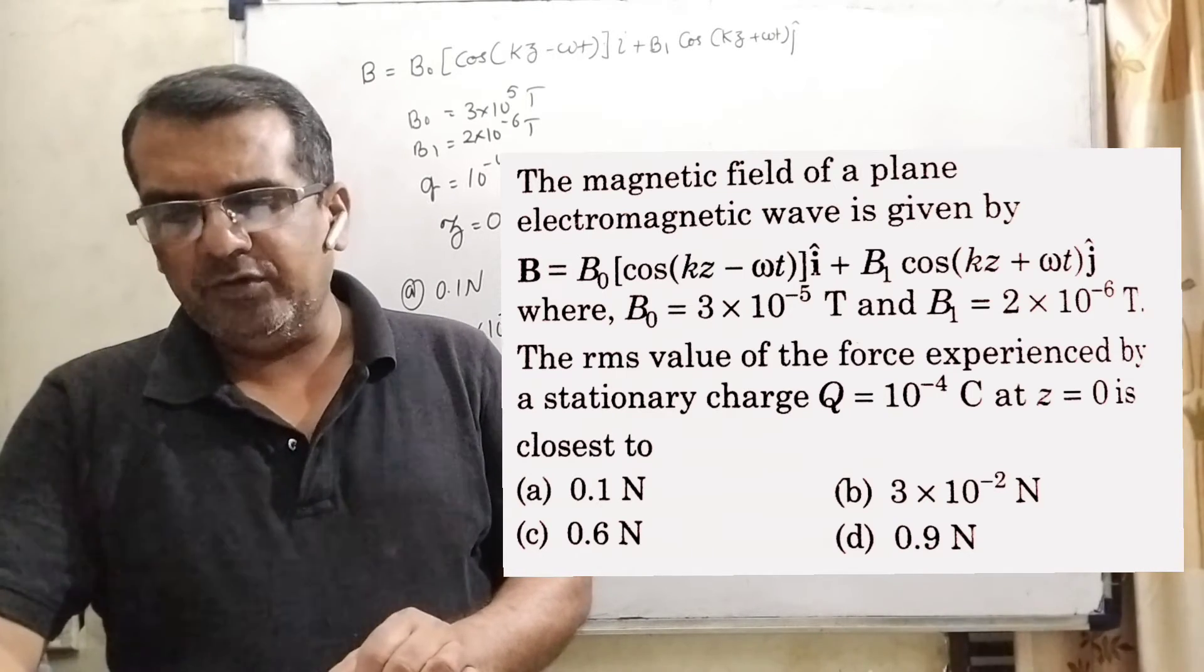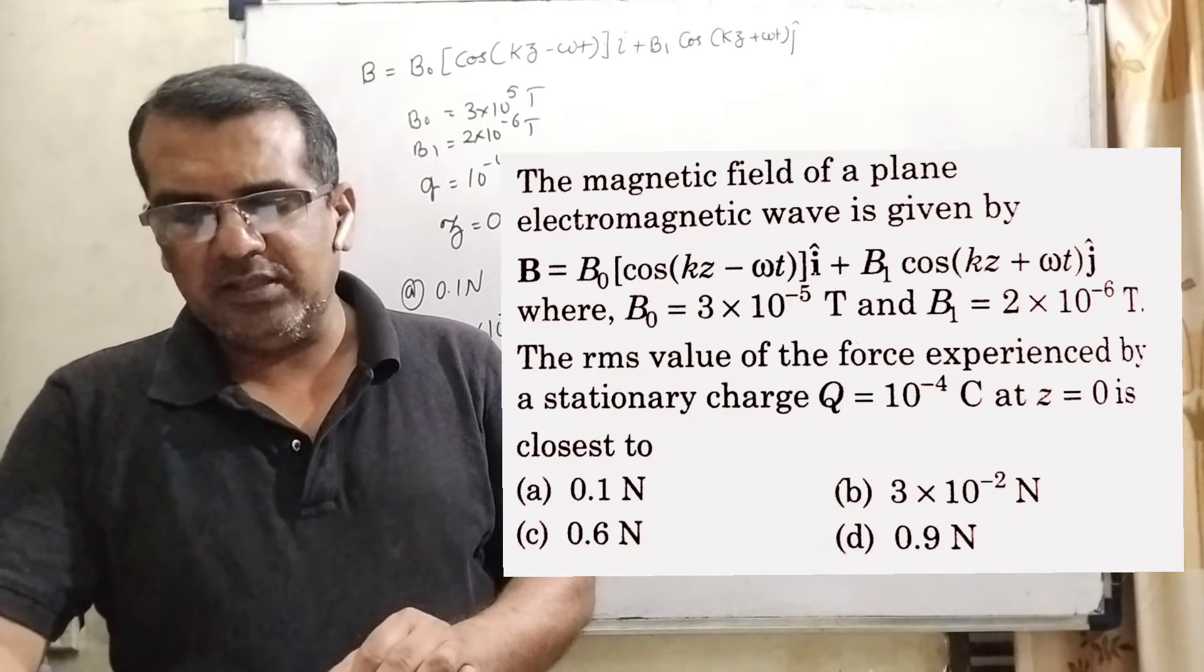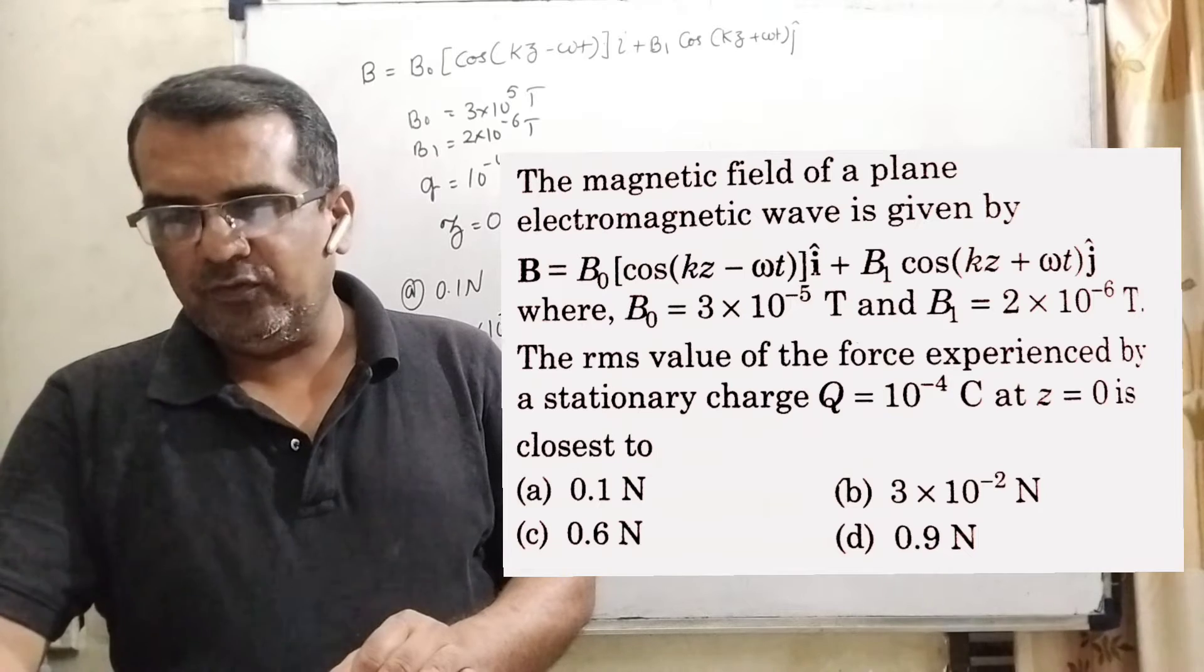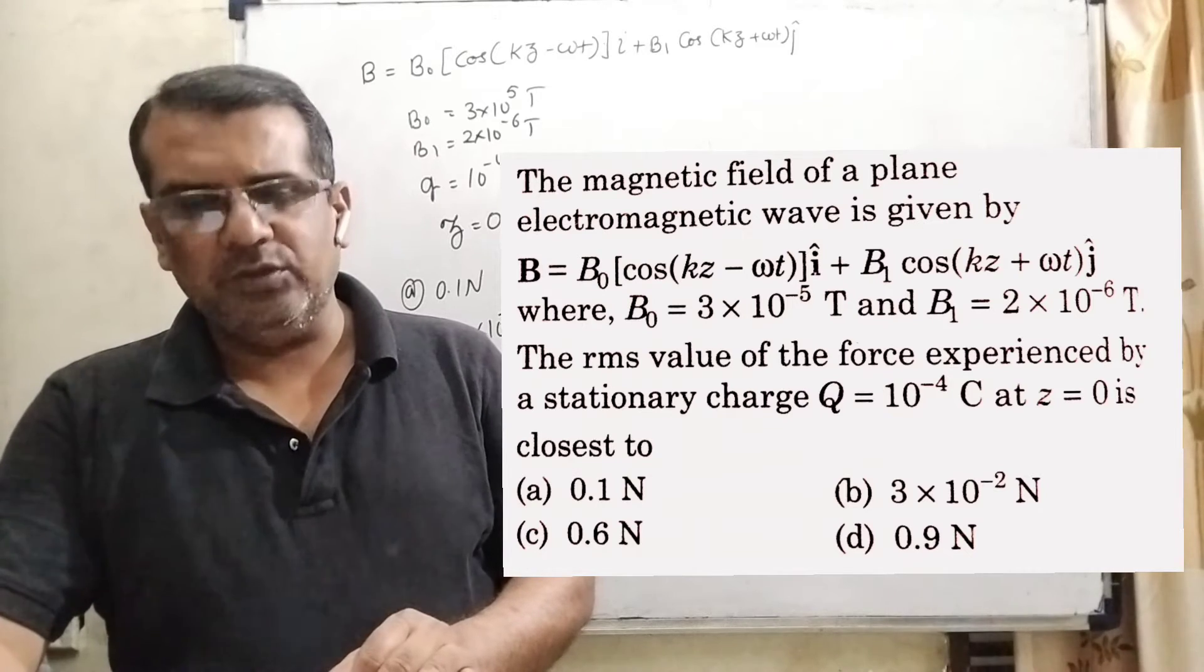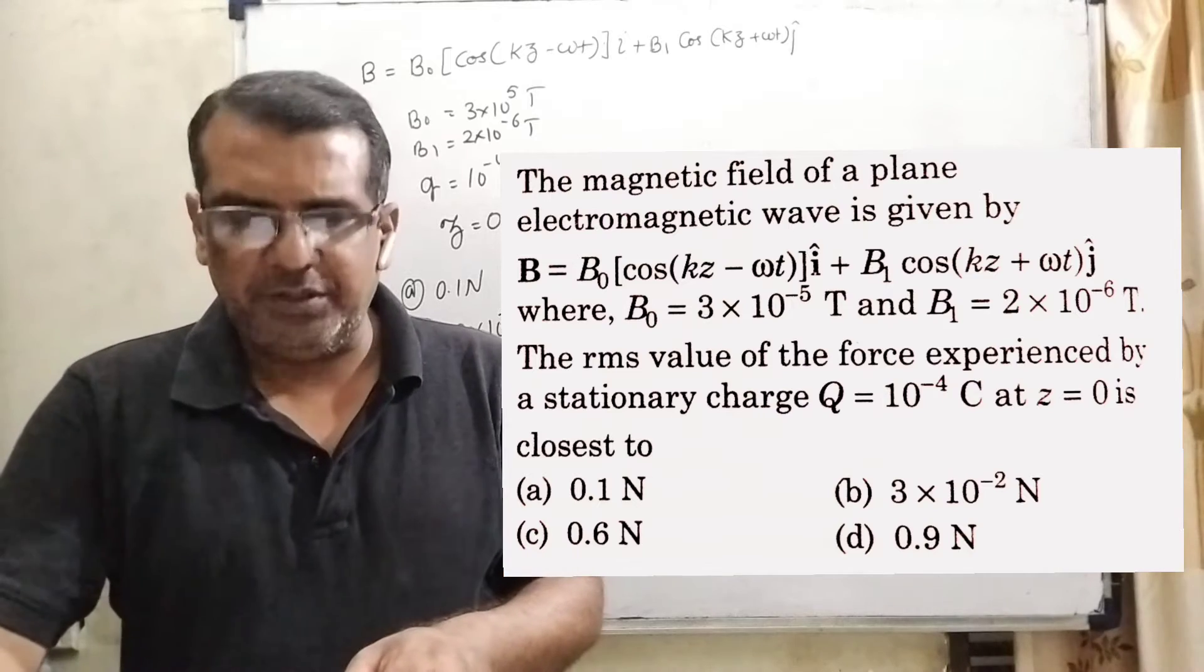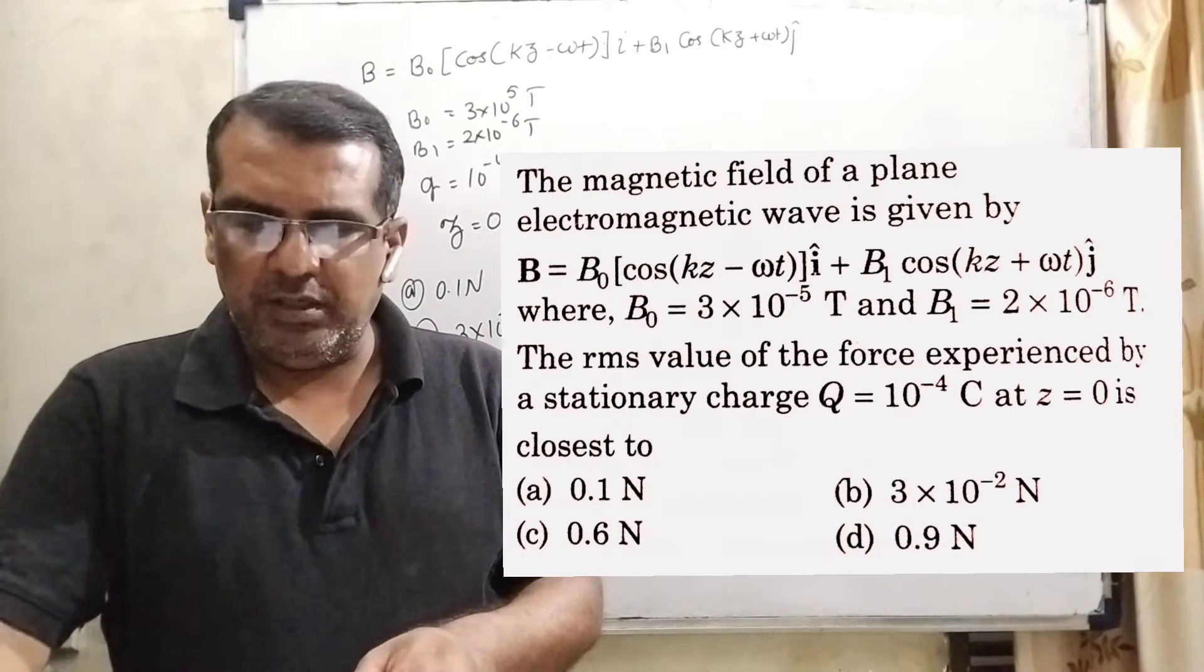The RMS value of the force experienced by a stationary charge equal to 10 raised to the power minus 4 coulomb at z equal to 0 is closest to—here we have given four options. Option A, 0.1 newton. Option B, 3 into 10 raised to the power minus 2 newton.